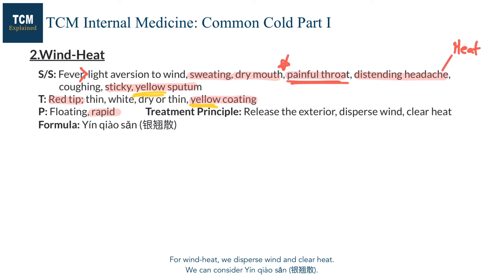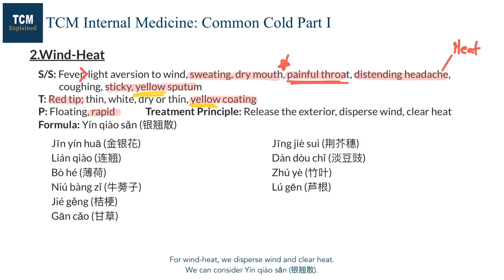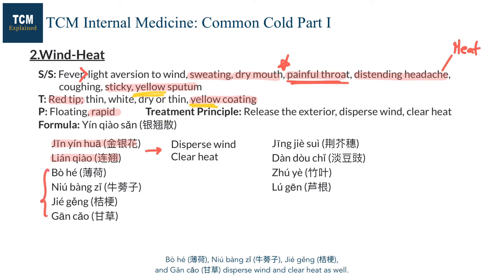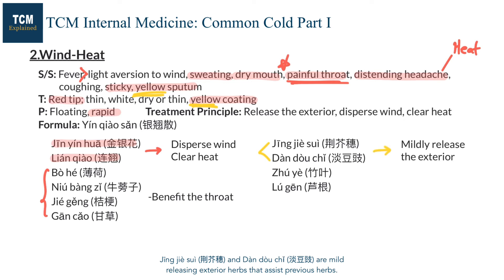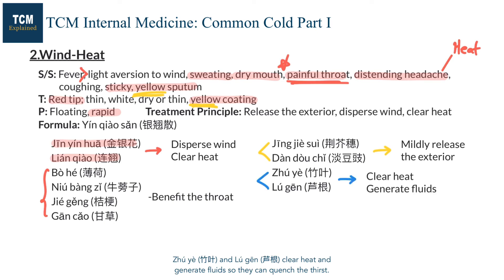We can consider Yin Qiao San. Jin Yin Hua and Lian Qiao disperse wind and clear heat. Bo He, Niu Bang Zi, Jie Geng, and Gan Cao also disperse wind and clear heat, with a special action to benefit the throat. Jing Jie Sui and Dan Dou Chi are mild exterior-releasing herbs that assist the previous herbs. Zhu Ye and Lu Gen clear heat and generate fluids to quench thirst.